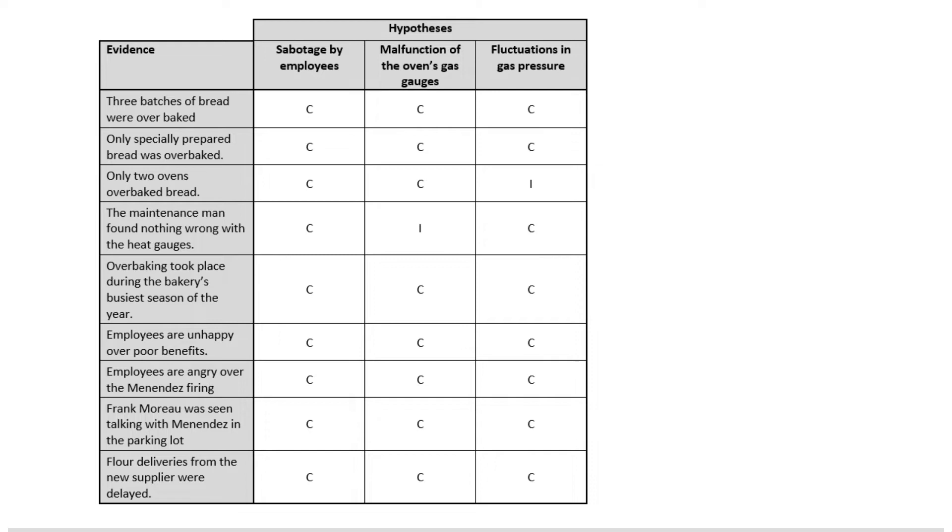But then the third piece of evidence is a little bit different. Only two ovens over baked bread. Could sabotage by employees have done that? Yes they could have. Could the gas gauges on those two ovens be malfunctioning? Sure. But there's only one gas line coming in, and if that gas line was not providing enough pressure or was providing too much pressure, it would have affected all three ovens. So that piece of evidence seems to point against the idea of the gas pressure in the line being the driving factor.